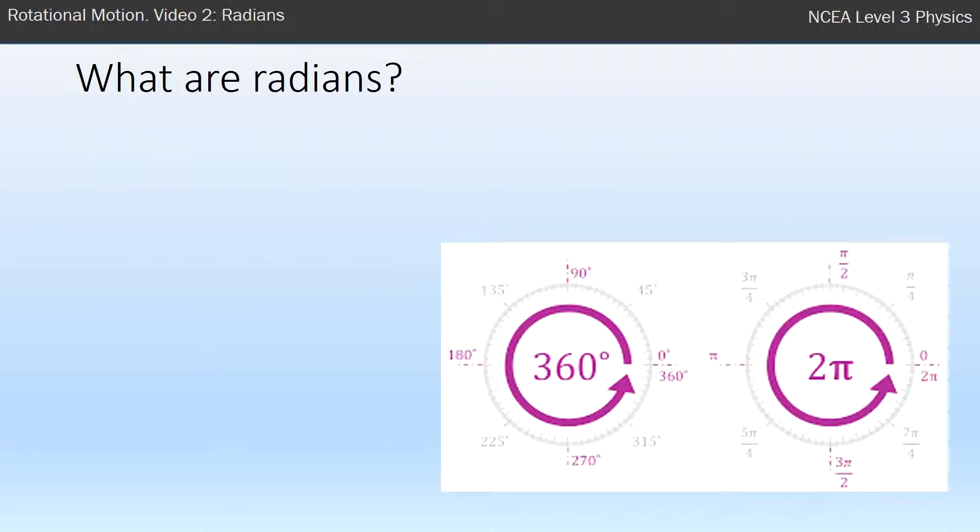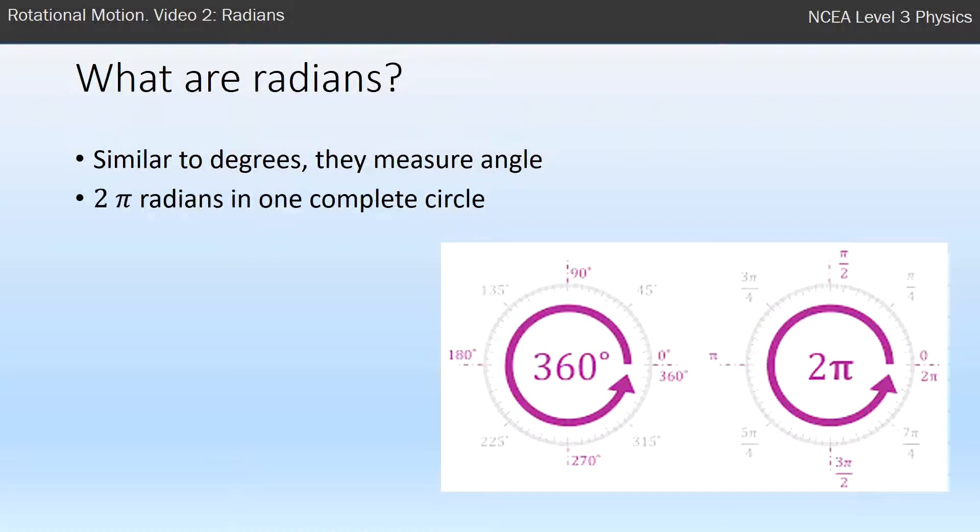So radians you might have come across before similar to degrees in measuring angles. Whereas we have 360 degrees in a circle, we have 2π radians, and 2 times π is 6.28 radians in a circle. So 360 degrees is 2π radians, therefore if you simplify that, 180 degrees is π radians. Now if you can remember that 360 degrees, one full circle, is 2π radians, you can complete most calculations without having to remember any formula.